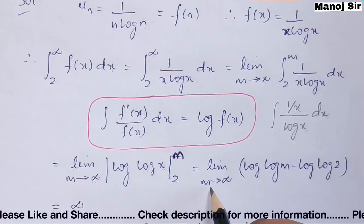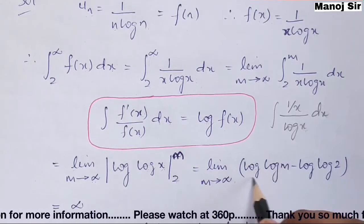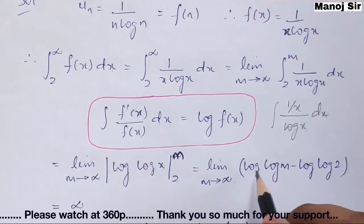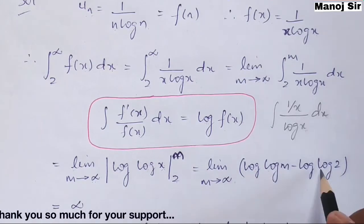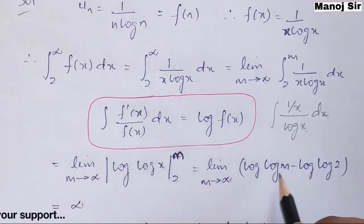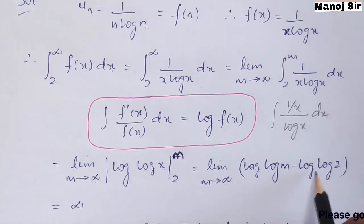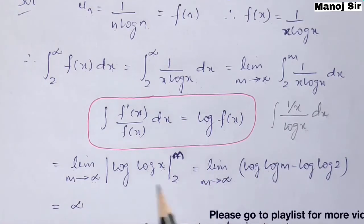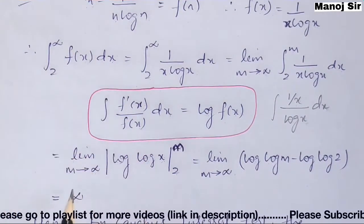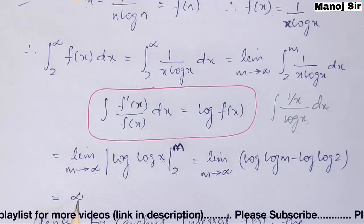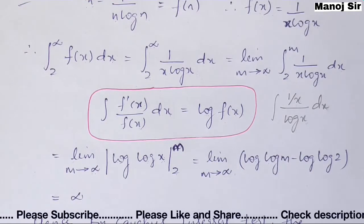Now as m tends to infinity, log(log m) becomes an infinite value. log(log infinity) gives an infinite value, and log(log 2) is just a small finite value. So infinite minus a small finite value is still infinite. Therefore the value of this integration is infinity.